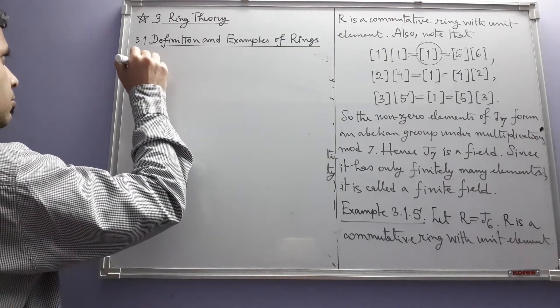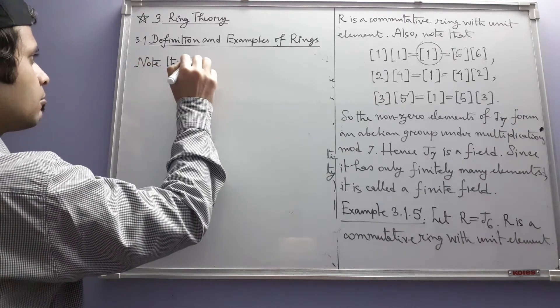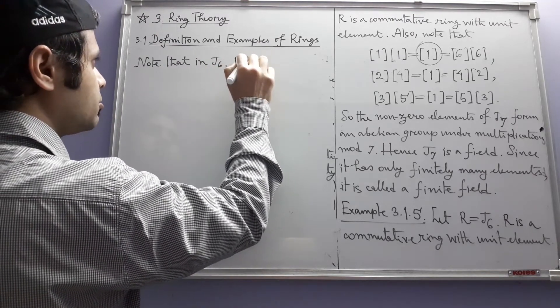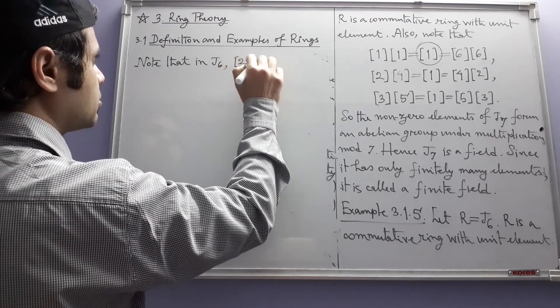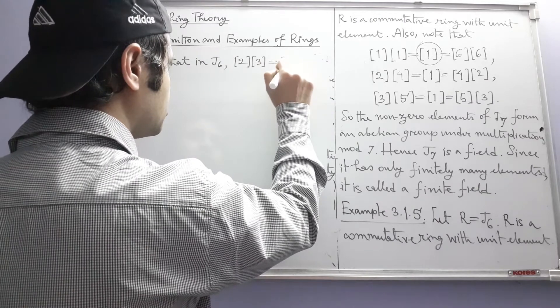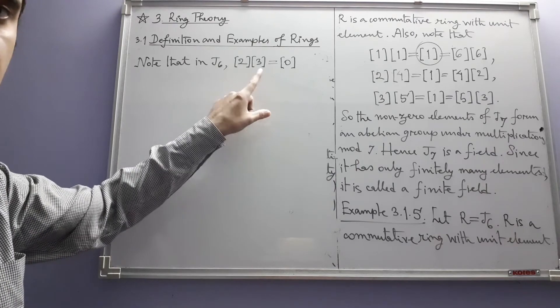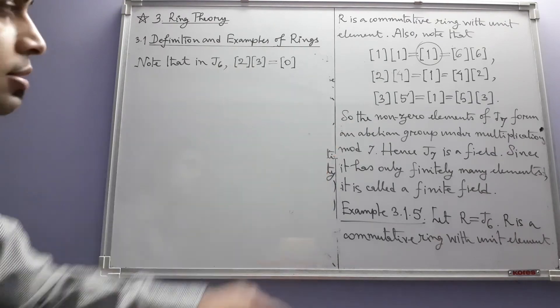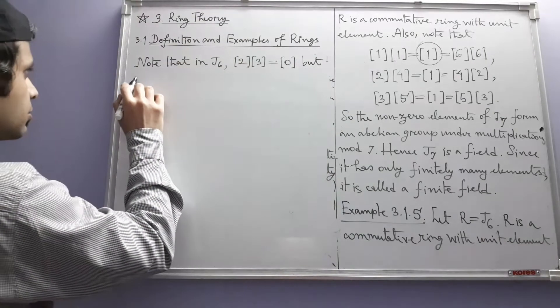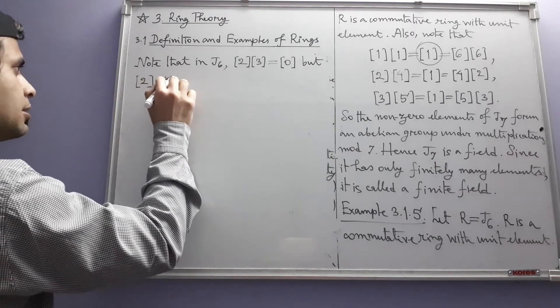Note that in J6, if we multiply these two congruence classes containing two and three respectively, then it becomes the zero congruence class, because two times three is congruent to zero modulo six. But none of the elements equals the zero element.